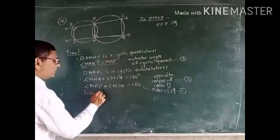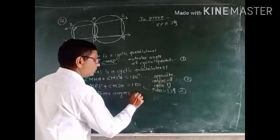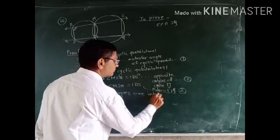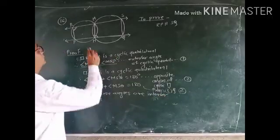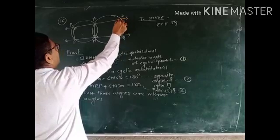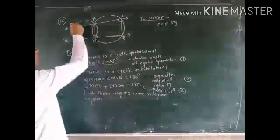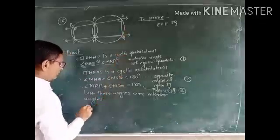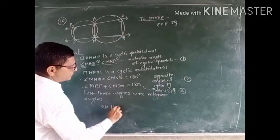But these angles are interior angles. See, these two angles are, in general, if the sum of two interior angles is 180, then these lines are parallel. Therefore, RP is parallel to SQ.